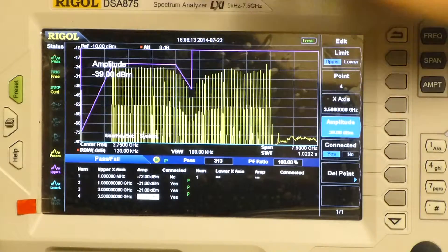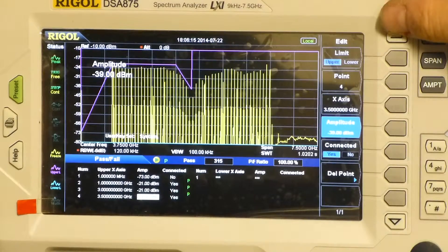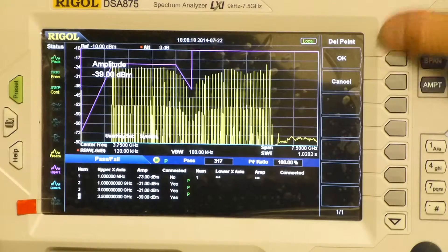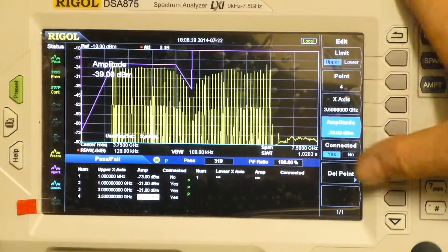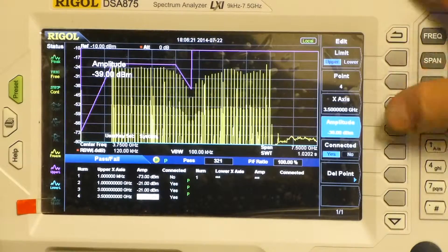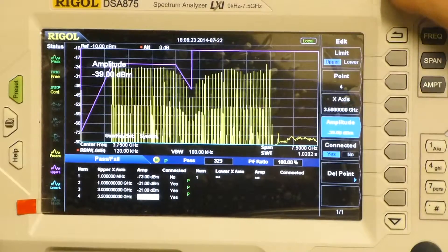So any emissions that exceed that level, I can then say I want the pass-fail to trigger, and there are a number of options on this menu.